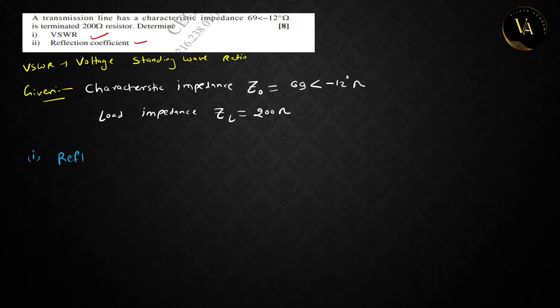Reflection coefficient formula is ZL minus Z₀ divided by ZL plus Z₀, ratio of impedance.